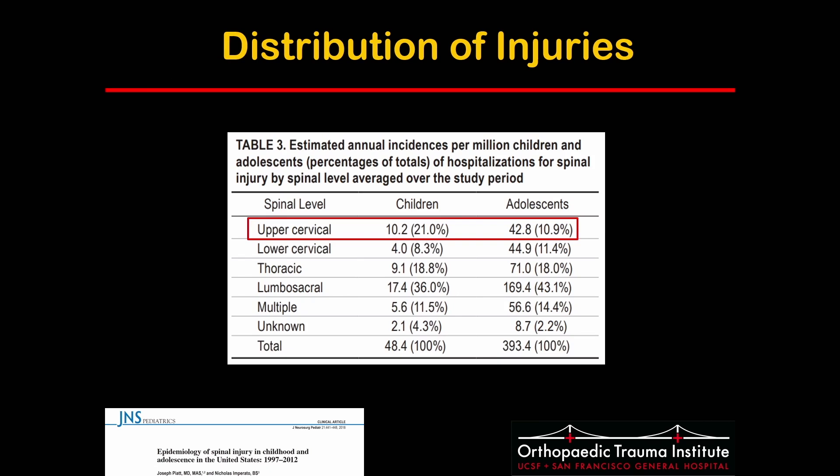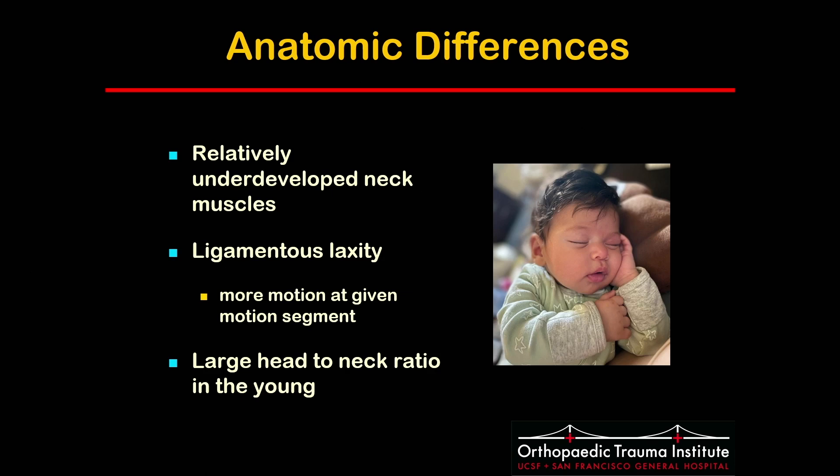The location of injuries within the spine differs with age. Upper cervical injuries are overrepresented in the young, while adolescents are more similar to the adult population. This is due to anatomic differences: the pediatric population have relatively underdeveloped neck muscles, increased ligamentous laxity allowing more motion at a given segment, and a large head-to-neck ratio which shifts the fulcrum of rotation more cephalad.